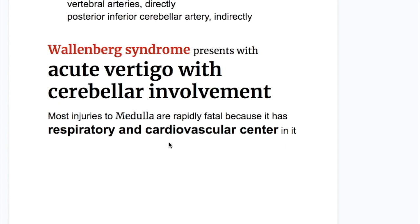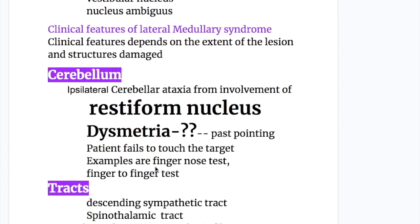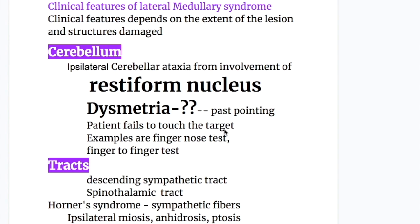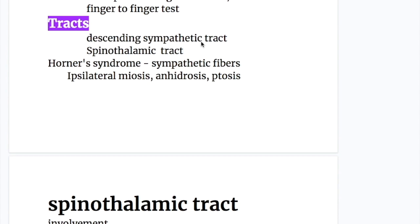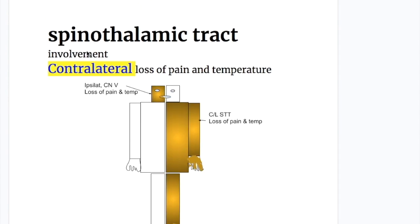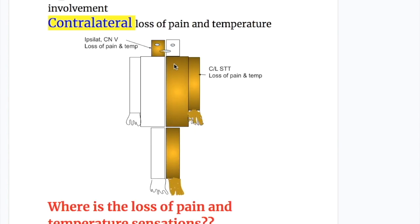What is the presentation of Wallenberg syndrome? PICA syndrome presents with acute vertigo with cerebellar involvement causing cerebellar ataxia. The first structure involved is the cerebellum, causing ipsilateral cerebellar ataxia from involvement of the restiform body, and dysmetria — past pointing — where the patient fails to touch the target, assessed by the finger-nose and finger-to-finger tests. The descending sympathetic tract interruption causes Horner's syndrome: ipsilateral miosis, anhydrosis, and ptosis. The spinothalamic tract involvement causes contralateral loss of pain and temperature on the body surface.